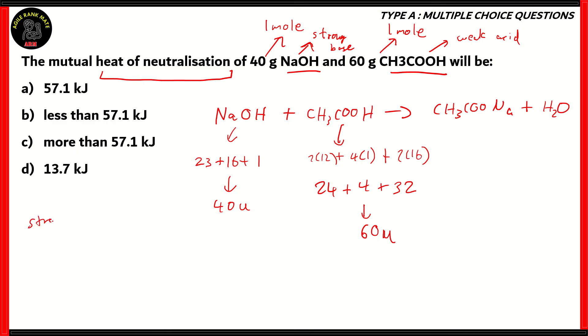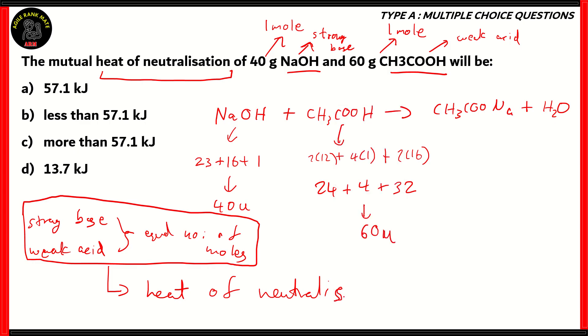Therefore, we have a strong base and a weak acid, and both of them have equal number of moles present. In this particular condition, the heat of neutralization is always going to be a value that is less than 57.1 kilojoules. So the right answer is option B, less than 57.1 kilojoules. The reason why that's correct is because we have the conditions for that particular case to occur. We have a strong base reacting with a weak acid, and both have equal number of moles present.